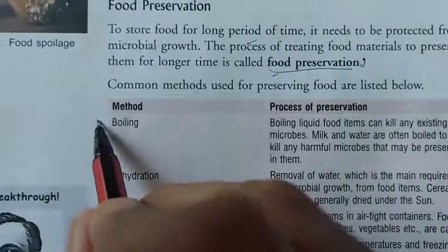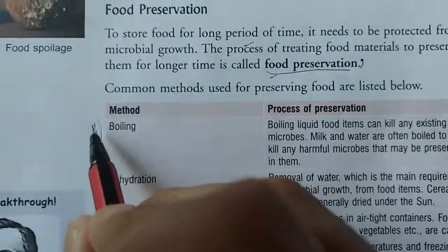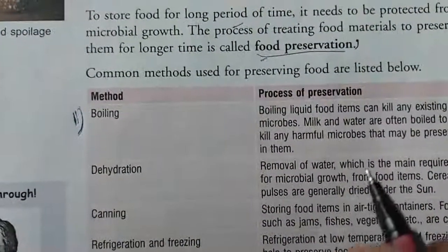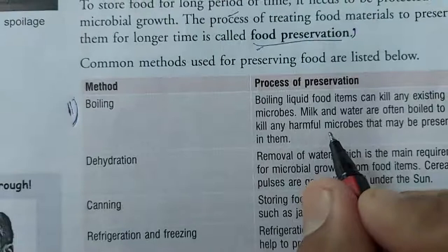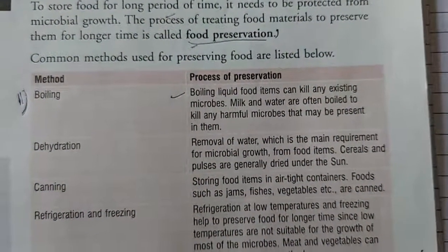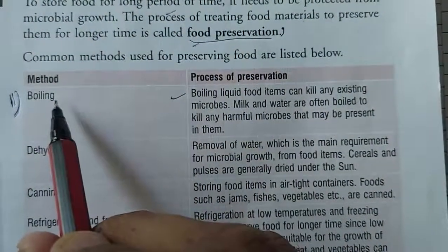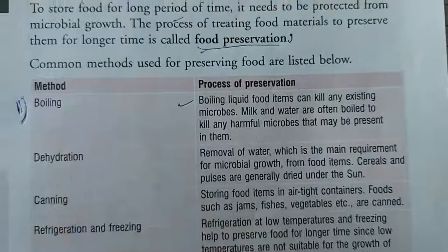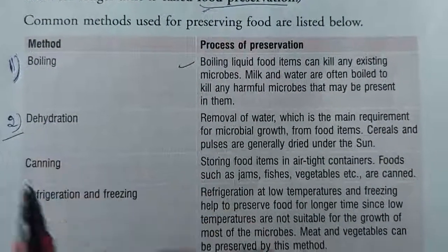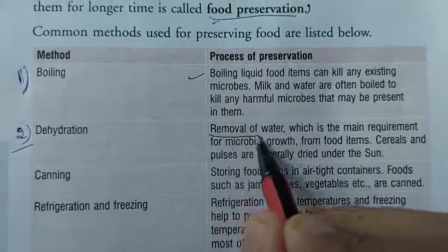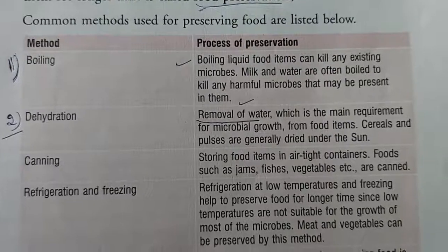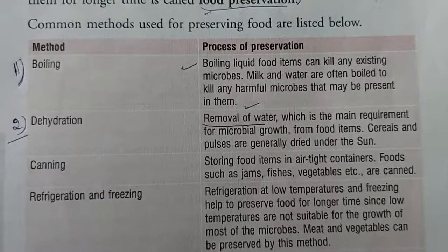You can practice the method of boiling. When you boil milk, the harmful microorganisms present in the milk are killed, and your milk is preserved. Boiling kills harmful microorganisms, so food is preserved. The second method is dehydration. Dehydration means removal of water from the food. If water is removed from the food, the growth of microorganisms will be very slow.